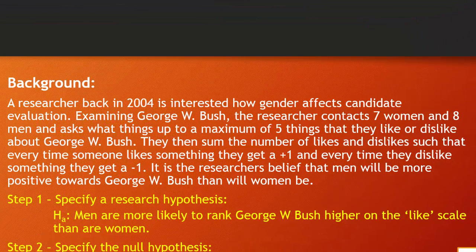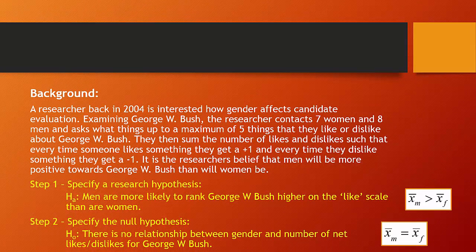Here's a sample problem. A researcher in 2004 is interested in how gender affects candidate evaluation of George W. Bush. The researcher contacts seven women and eight men and asks what things — up to a maximum of five — they like or dislike about George W. Bush. If someone likes five things and dislikes nothing, they get a plus five; if someone dislikes five things and likes zero, they get a negative five. So we get a scale running from negative five to positive five.